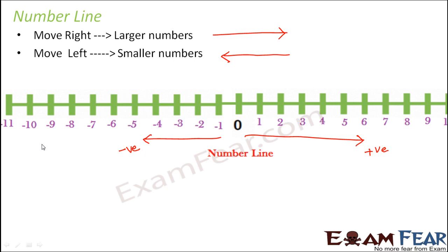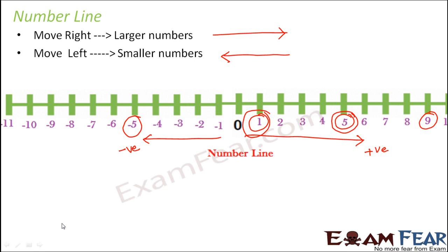Let us look at some examples. If I compare 5 with 1, which is bigger? 5 — because 5 is located towards the right of 1. Now let us compare 5 with 9: 9 is bigger because 9 is located towards the right side of 5. Now if I compare 1 with minus 5, which is bigger? Even though 5 is bigger than 1, minus 5 is less than 1, because 1 is located on the right side of minus 5. So any number located towards the right is a bigger, larger number.